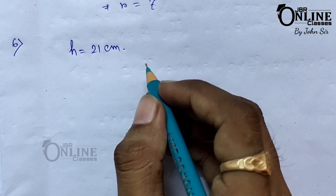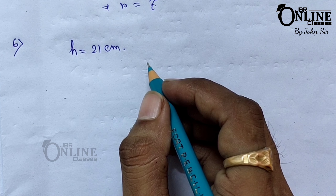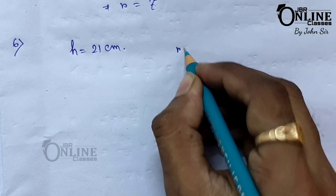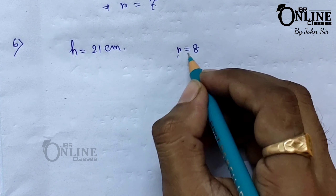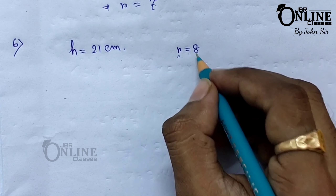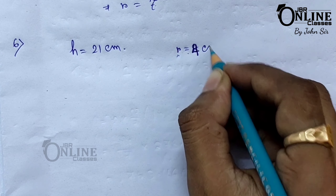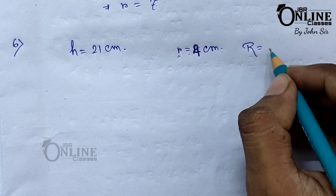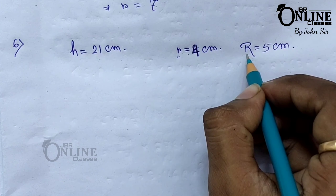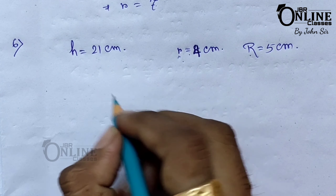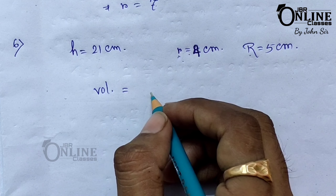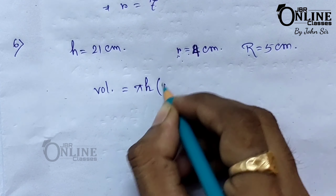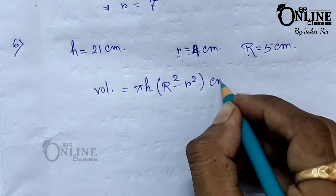Sum number six: a drainage tile is a cylindrical shell 21 centimeters long, so height equals 21 centimeters. The inside and outside diameters are 8 centimeters and 10 centimeters. Inside diameter 8 gives internal radius small r equals 4. Outside diameter 10 gives external radius capital R equals 5 centimeters. Find the volume using the hollow cylinder formula.